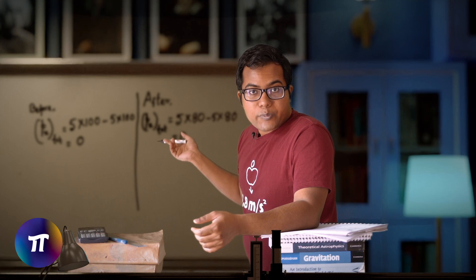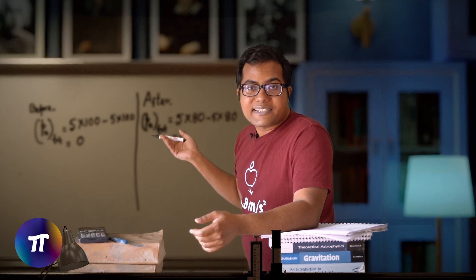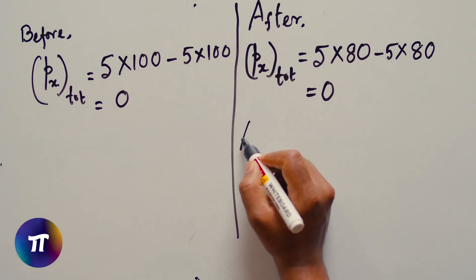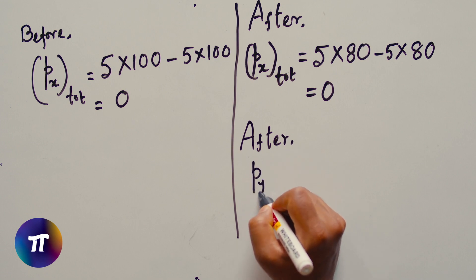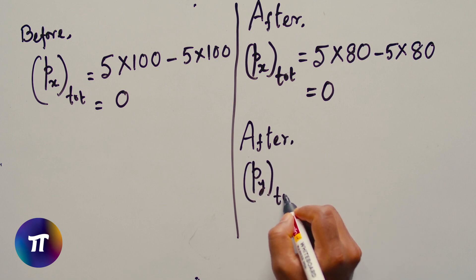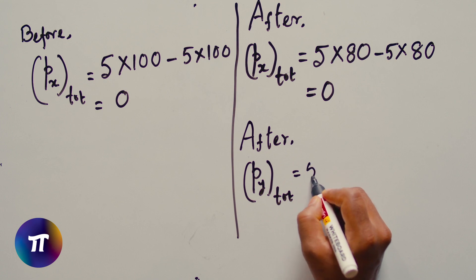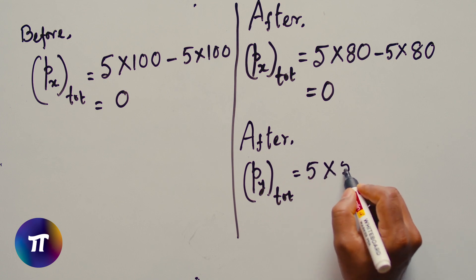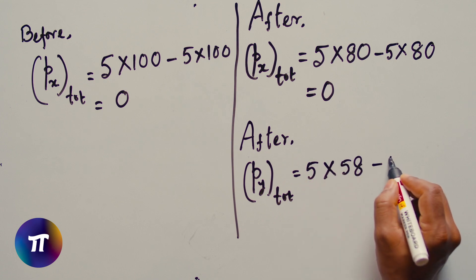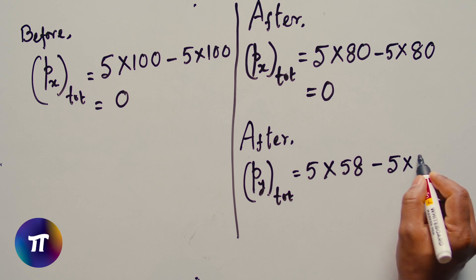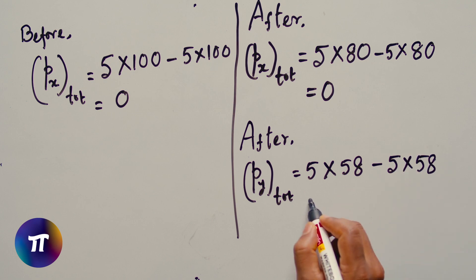The net y momentum before collision is 0. The net y momentum after collision is 5 times negative 58 plus 5 times negative 58 is equal to negative 580, which is also equal to 0.